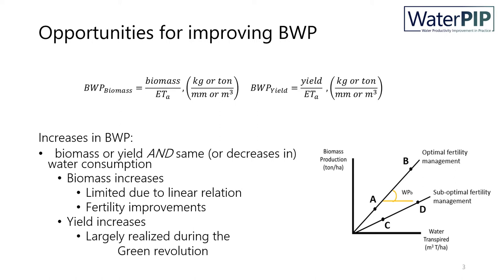In rain-fed agriculture, fertility improvements might still be possible, but they come at the risk of exacerbating water stress. This is because improved fertility will lead to higher biomass production that demands more water, pronouncing potential water stress.